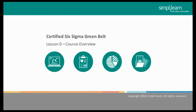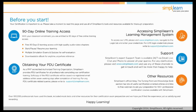Hello and welcome to the introductory lesson of the Certified Six Sigma Greenbelt course offered by Simply Learn. This lesson provides an overview of the Certified Six Sigma Greenbelt, or CSSGB, course. The next screen shows the key features of Simply Learn. Please spend some time to go through the key features of Simply Learn displayed on the screen. Let us look at the objectives of this course in the next screen.